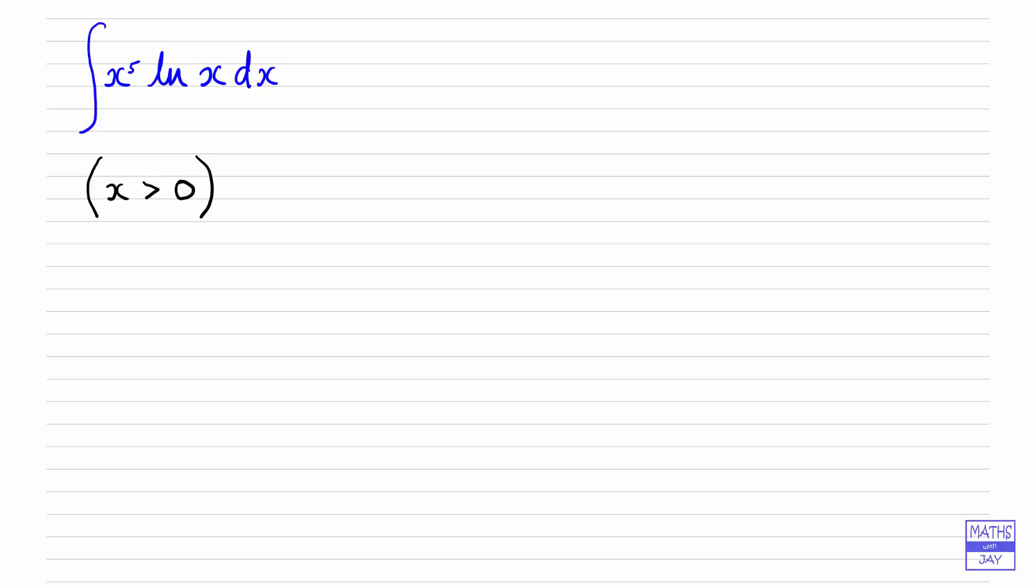So we want to integrate x to the power of 5 multiplied by the natural log of x with respect to x, and we know that x is positive. That's important when we've got a log because logs are not defined for values that are not positive.